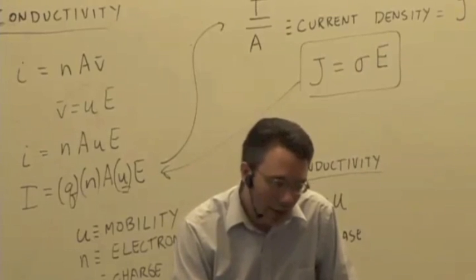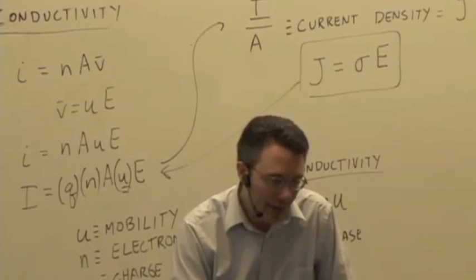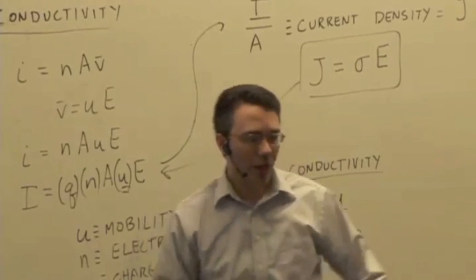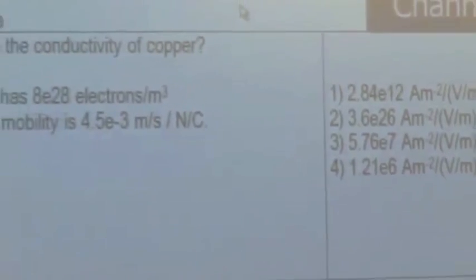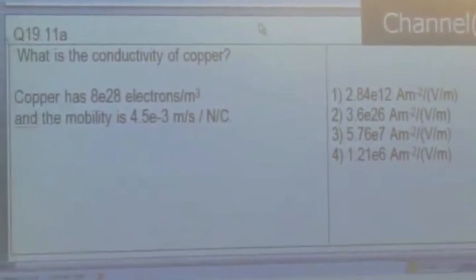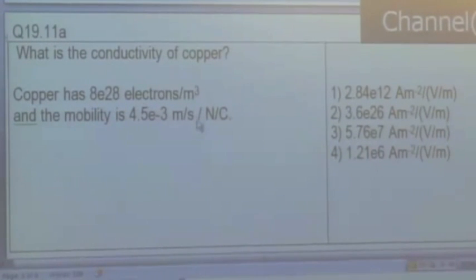So let's just try a quick calculation. Nothing too fancy here. If you know that copper has an electron density of 8 times 10 to the 28 electrons per meter cubed, and a mobility of 4.5 times 10 to the minus 3 meters per second divided by newtons per coulomb, what's the conductivity? The units are kind of funny looking, but we'll simplify the units in just a second.